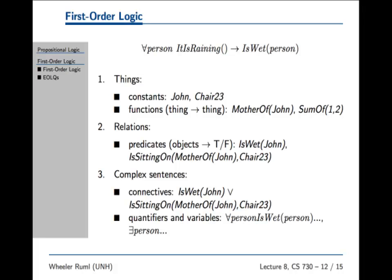So here's a sentence in first order logic. This is called for all. For all person, it is raining implies is wet person. Is wet is not a function. It is a predicate. Now how do you tell that that's a function, not a predicate? Well, a function, so in the logic, there are things. There are constants, which I guess I'm going to capitalize.